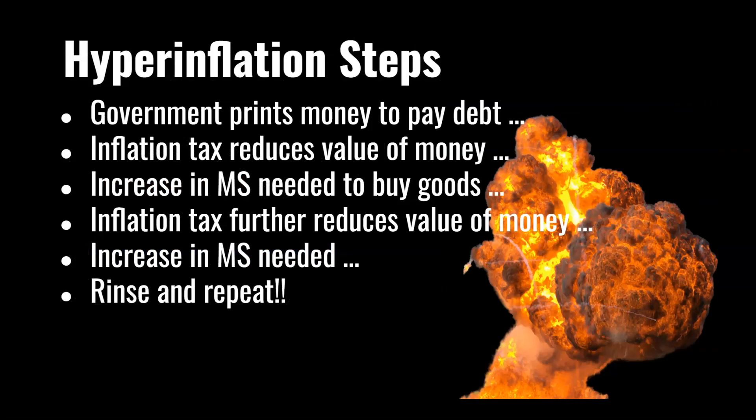Essentially, what happens is the government prints money to pay off its debt. That decision creates an inflation tax, which reduces the value of money that people hold. Because their money is worth less, it takes more to buy the same goods as before, so the government creates an increase in money supply to help meet that need for liquidity — but that creates a further inflation tax, which further reduces the value of money, leading to a need for more money supply, and so on. If it gets out of control, as it did in places like Zimbabwe or Venezuela, you can see literally millions of a percent change in the value of money in a very short period of time. Governments have to be very careful when following expansionary policy that they don't set off this chain of events that leads to a spiral of increasing prices.